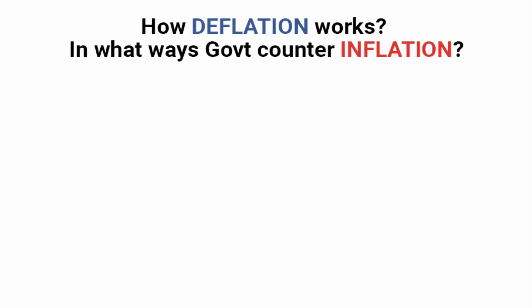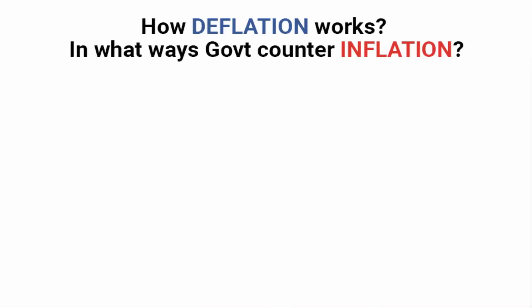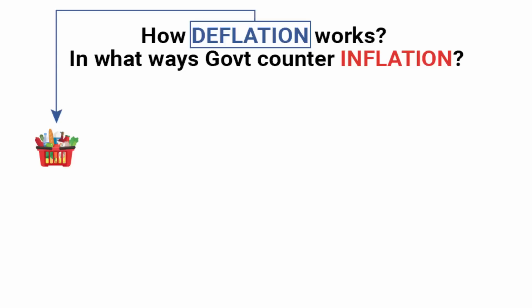In today's topic, we are going to understand how deflation works and in what ways government counters inflation. So first, let me tell you the definition of deflation. When you hear the word deflation, I'm sure you must have heard the phrase 'deflate your car tires.' So deflation means taking out the air — anything that is removed or decreased. In economics, deflation simply means a decrease in the general price level of goods and services.